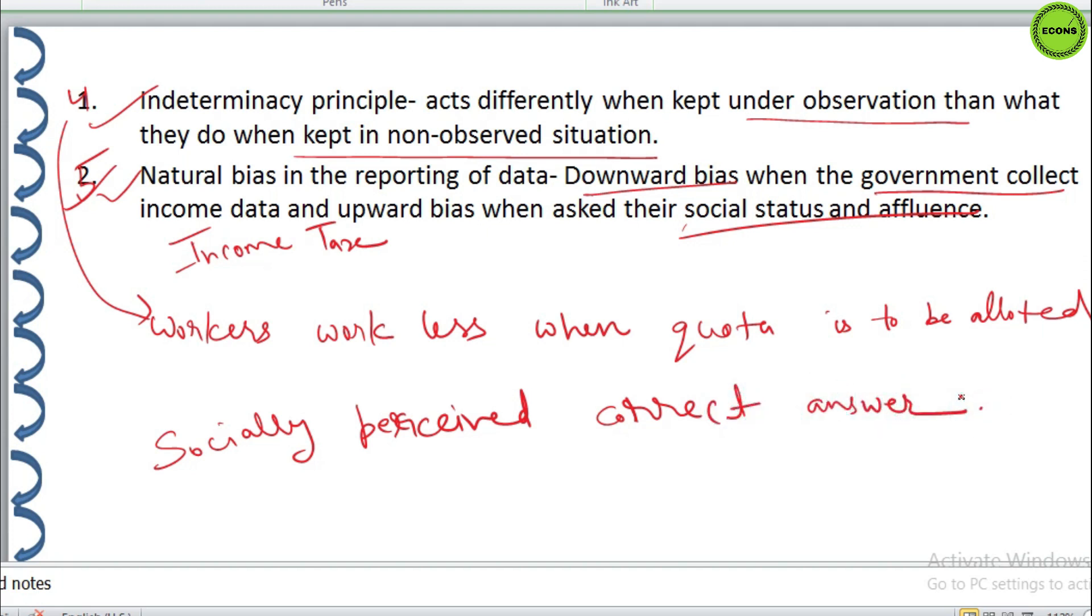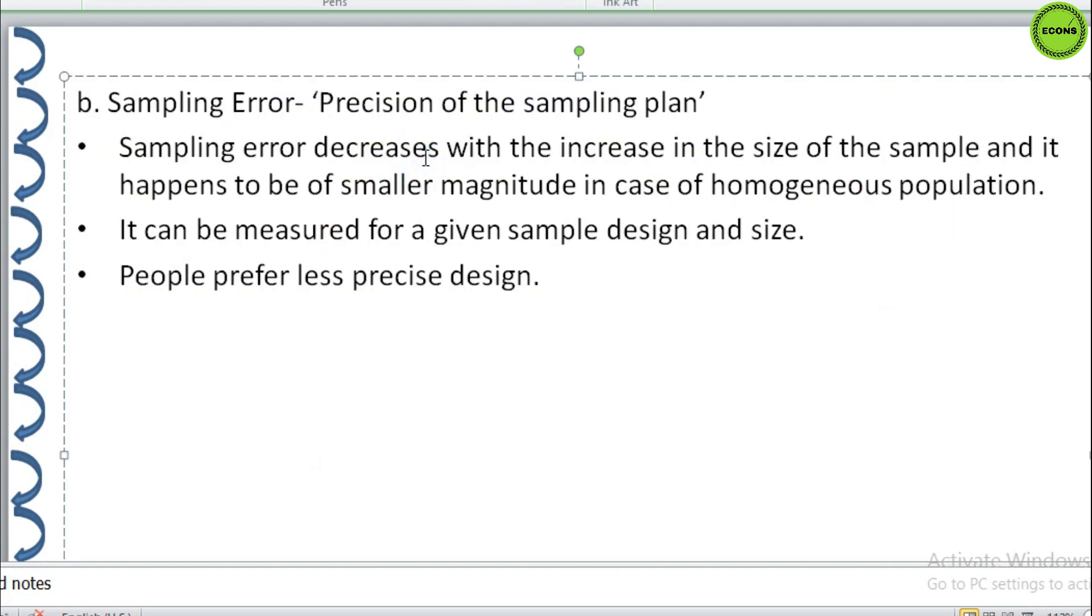On the other hand, sampling errors are random variations. Sampling errors decrease with the increase in the size of sample and it happens to be of a smaller magnitude in case of homogenous population. Sampling error can be measured for a given sample design and size. The measurement of sampling error is usually called the precision of the sampling plan.